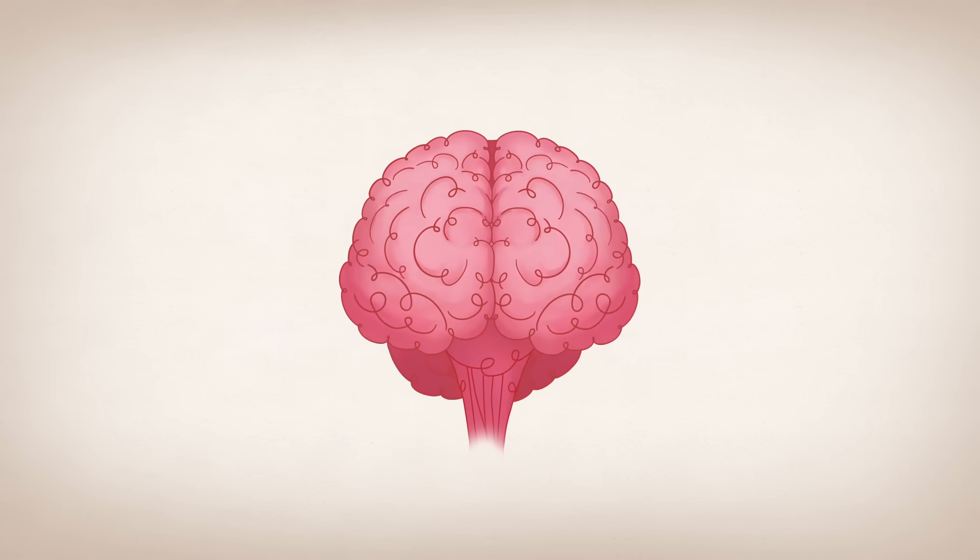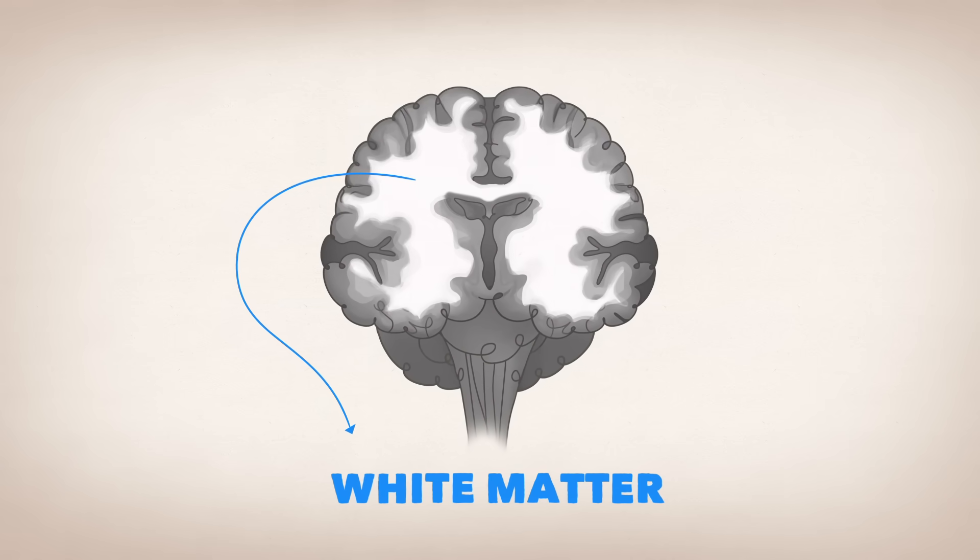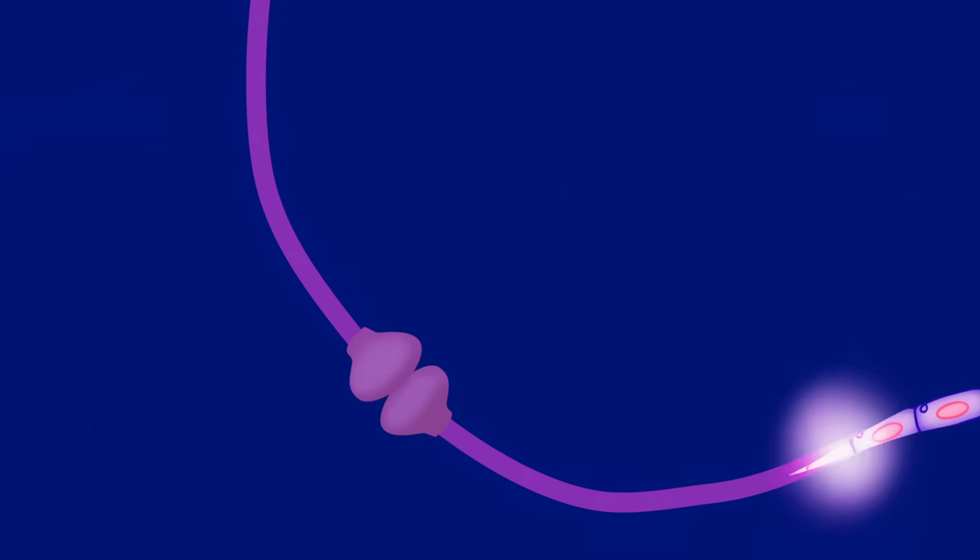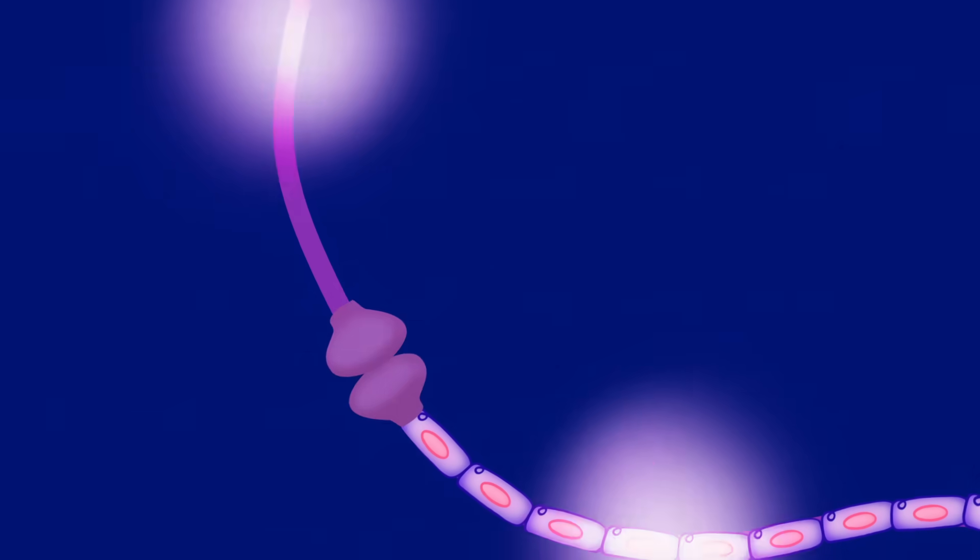This gray matter reduction coincides with an increase in white matter. White matter refers to connections that are myelinated, coated in a layer of insulation, allowing for fast, far-range communication between information hubs.